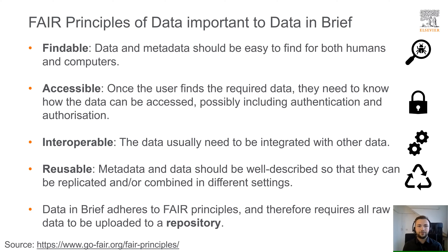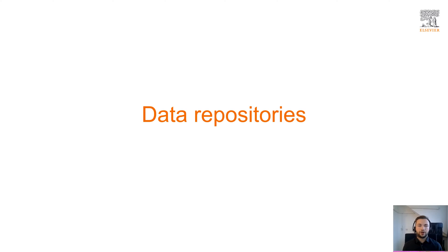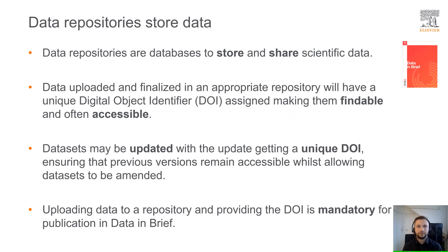To support the FAIR principles, Data & Brief requires all raw data to be uploaded to a repository. Data repositories are databases to store and share data. In appropriate repositories, the uploaded and finalized data will have a unique Digital Object Identifier, or DOI, assigned to it, making the data findable and accessible. In case of an update to the dataset, a new version may be uploaded that will get a unique DOI, ensuring that previous versions remain accessible whilst allowing datasets to be amended. Uploading data to a repository and providing the DOI is mandatory for publication in Data & Brief.